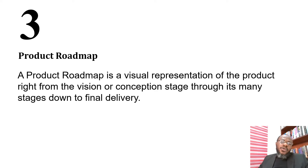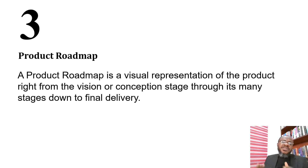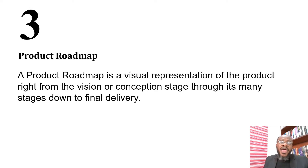The next thing we look at under release management is the product roadmap. A product roadmap is a visual representation of the product right from the vision or conception stage through its many stages down to final delivery. It presents us with a visual map — we can see the various stages, the milestones that exist within the project from start to finish, how delivery is going to happen, and how it's going to arrive at the clients.